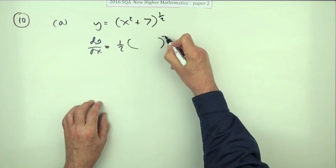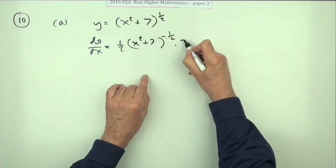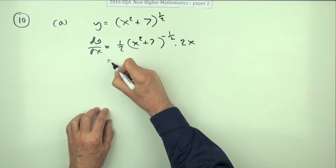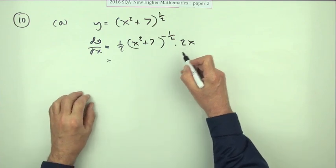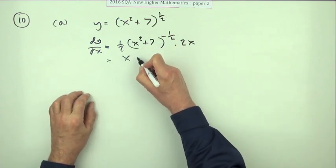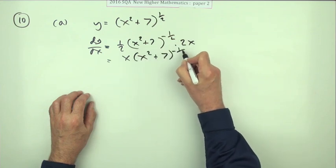That'll be a half of that to the power negative a half. And whatever's inside, you will then differentiate to get 2x. A half of the two disappears to 1, and you're left with x times that.